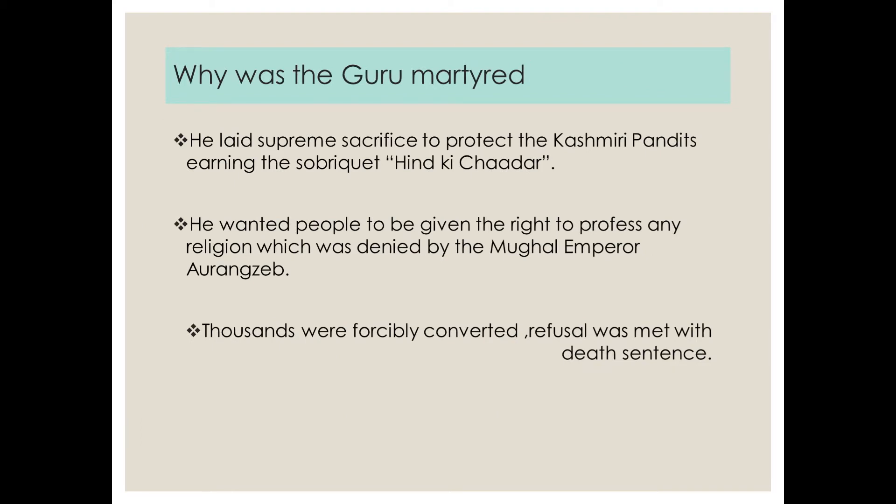In simple words, what Aurangzeb was doing was forcibly converting people into Islam; if they were not being converted, they were met with a death sentence. But what Guru wanted was that people should be given the right to profess any religion — and this right was being denied by Mughal Emperor Aurangzeb. So Guru laid a supreme sacrifice to protect the Kashmiri Pandits, and he earned for himself the title Hind Ki Chadar.